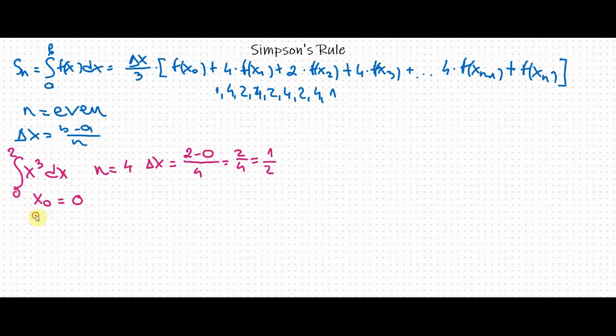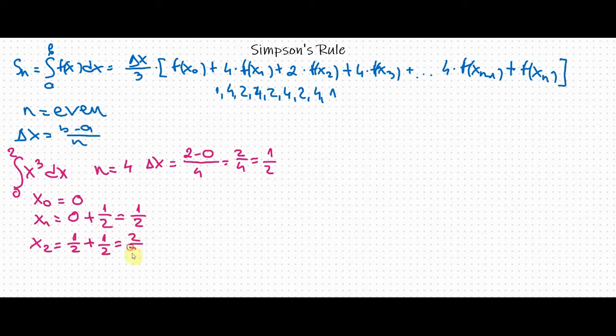Next, x sub 1 is 1 half. What we do is we just keep adding delta x. So we start with a which is 0 and then we add 1 half. For x sub 2 we have 1 half plus delta x which is 1 half, giving us 2 over 2 or simply 1. Now for x sub 3 we have 1 plus 1 half equals 3 over 2.